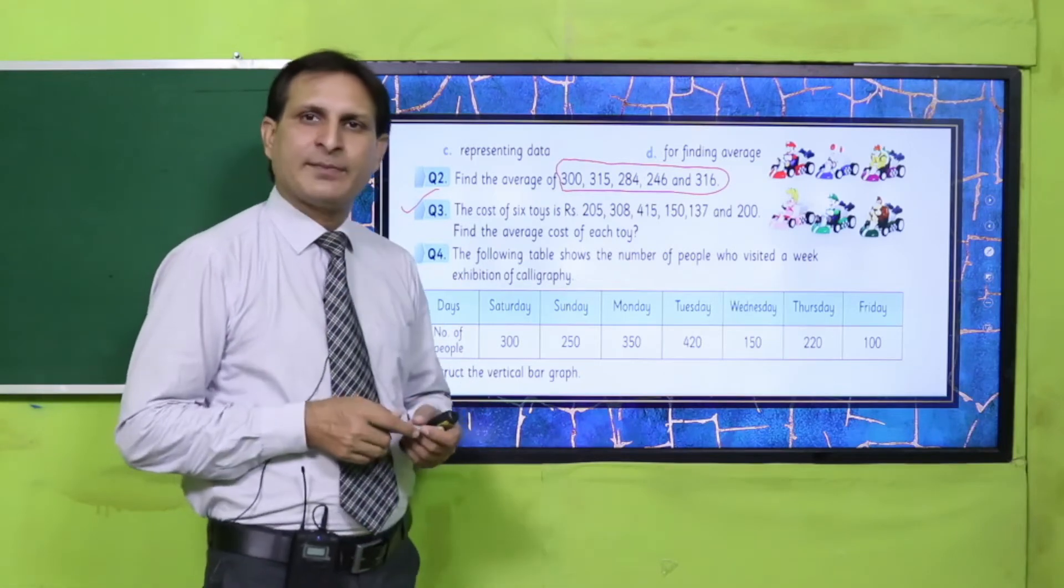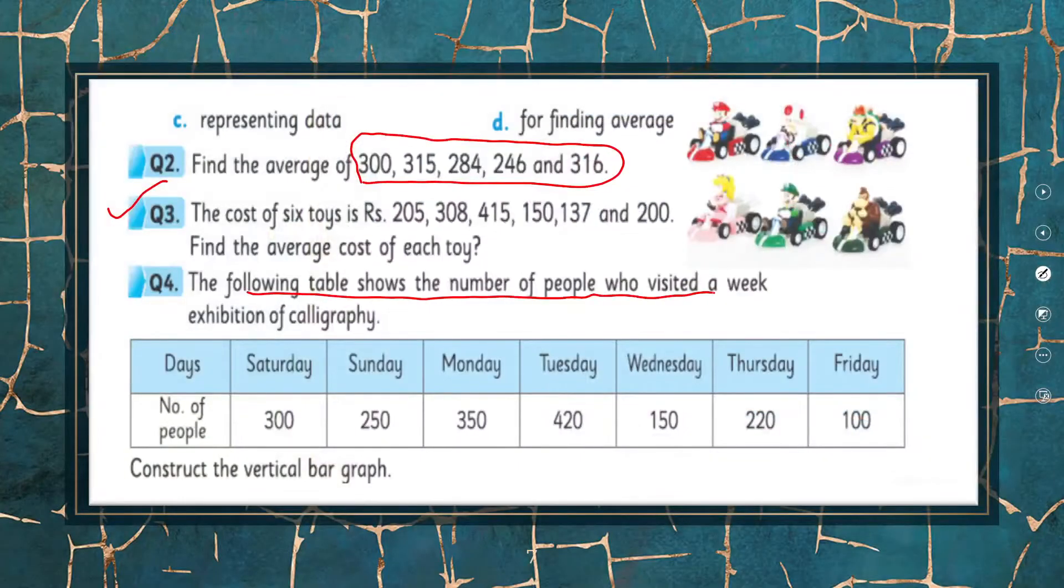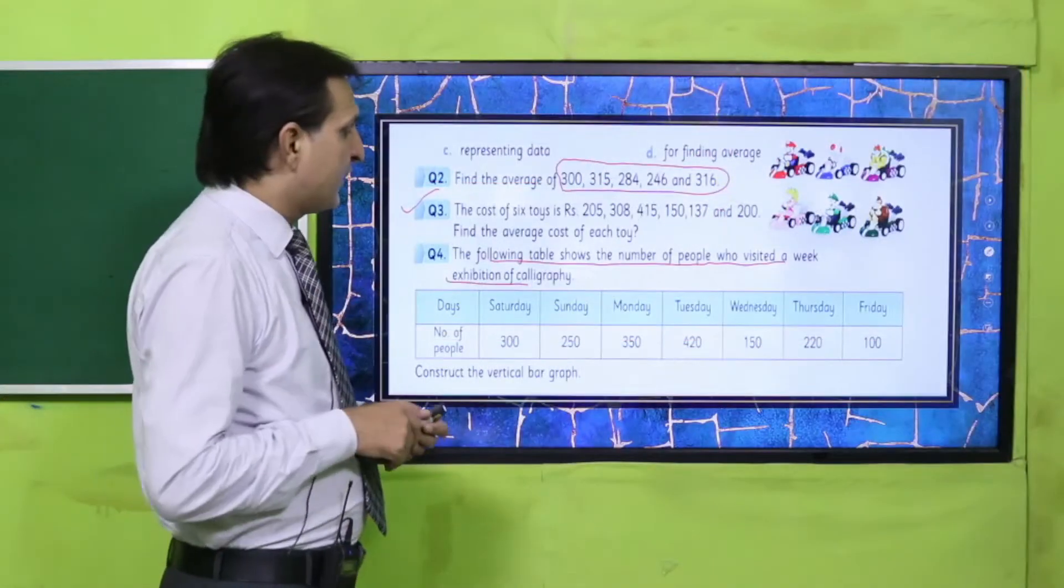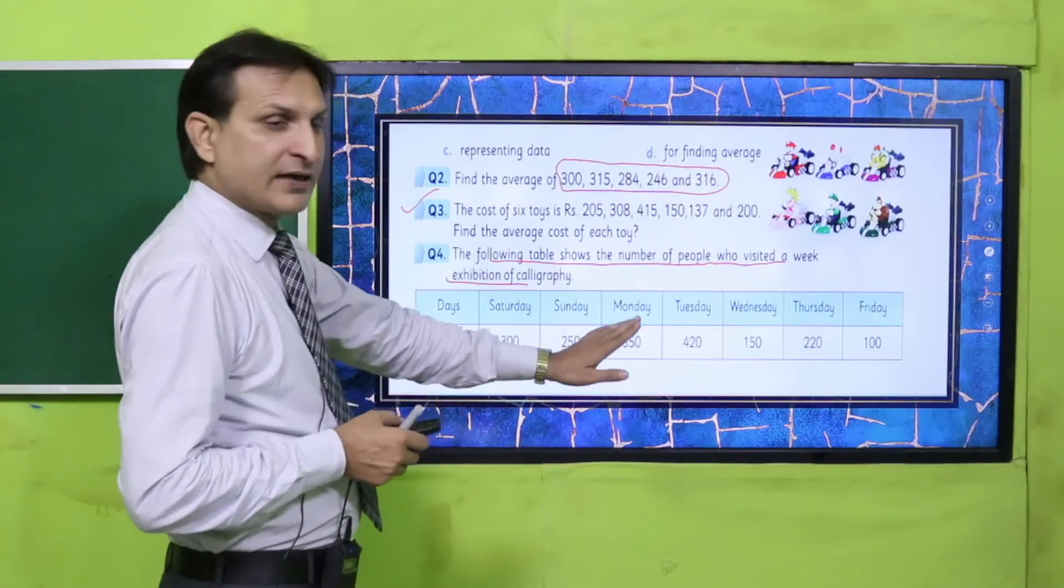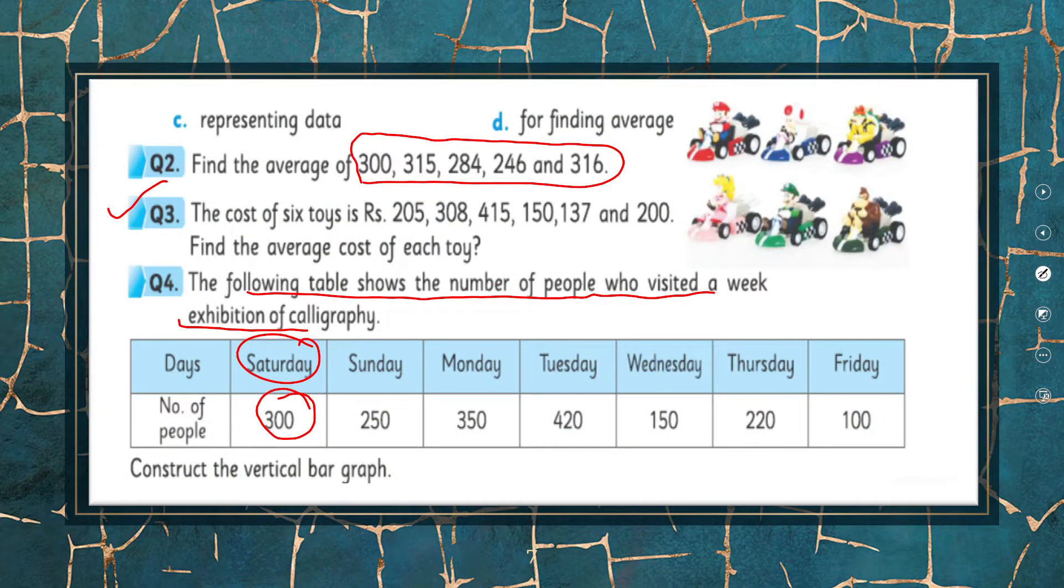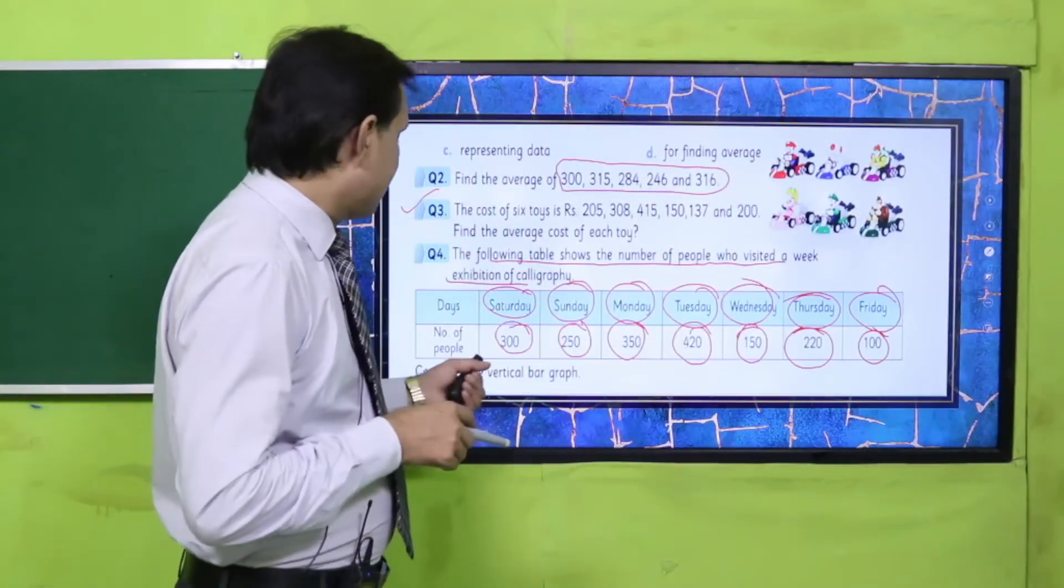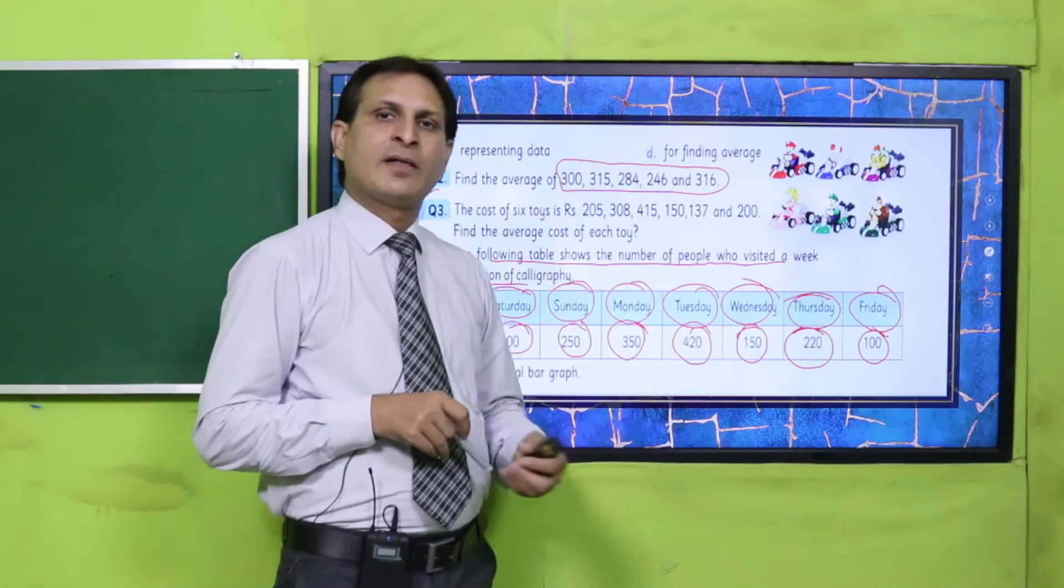Question number 4: Data and information is given. The following table shows the number of people who visited a week exhibition of calligraphy. How many people visited the exhibition in one week? Saturday: 300 people visited. Sunday: how many people visited?